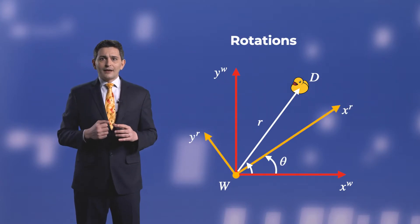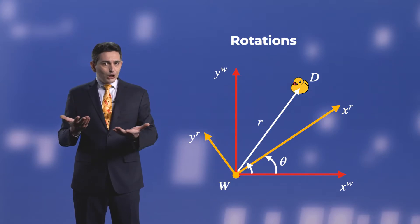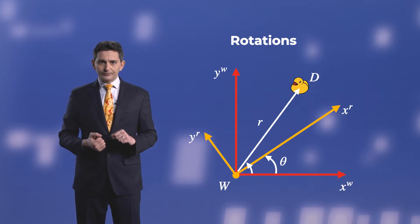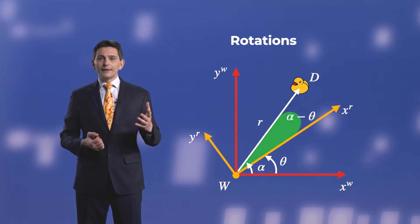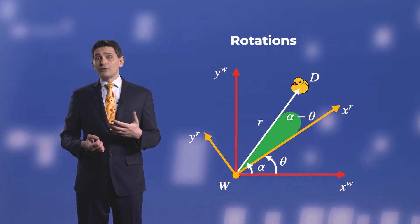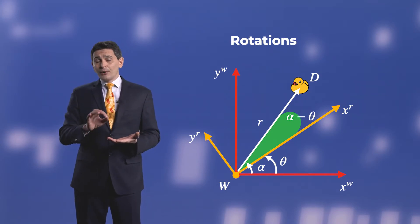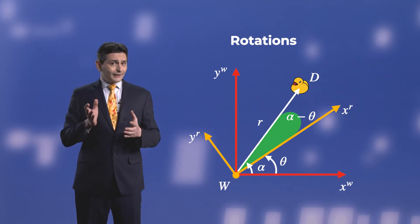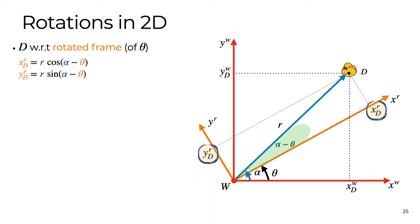Let's now assume that the world and robot frames share the same origin, but the robot frame is rotated of an angle theta with respect to the world frame. In this case, from the point of view of the robot frame, point D is always at the same distance R from the origin, but at an angle now that is alpha minus theta. So the coordinates of D in the rotated frame will be the projection on the axis.